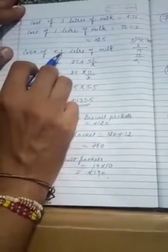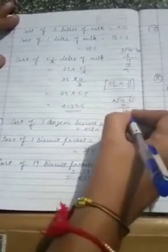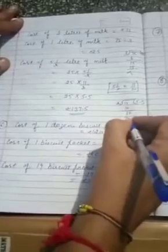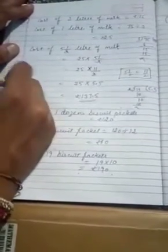So cost of 5 and half liters - when we have cost of 1, we multiply. 5 is written as 11 upon 2. So 11 upon 2, 2 into 5 is 10. We get 5.5. Now we multiply 5.5 and 25. You will get 137.5.